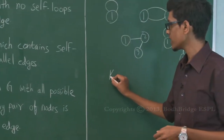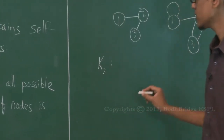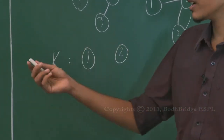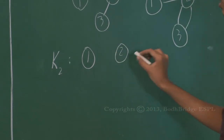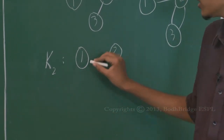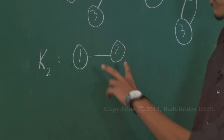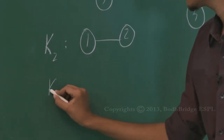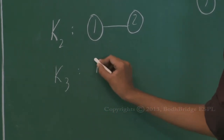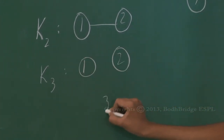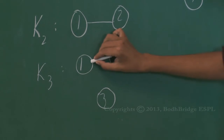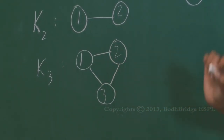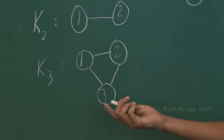K2 is a complete graph with two vertices. Since it's a simple graph, it cannot have a self-loop or parallel edges, so the only possible edge is between vertices 1 and 2 — every pair of nodes is connected. K3 has three vertices: vertices 1 and 2 are connected by one edge, vertices 1 and 3 are connected by one edge, and vertices 2 and 3 are connected by one edge. So this is a complete graph with three vertices.